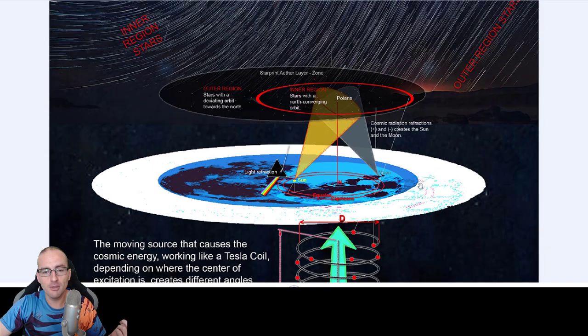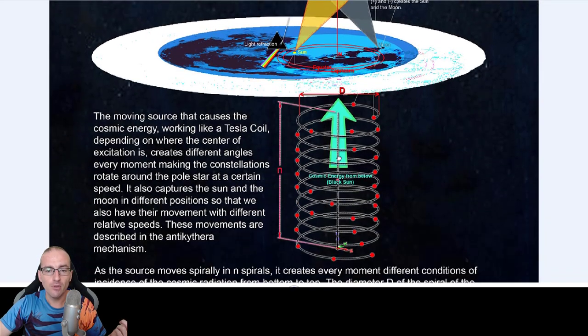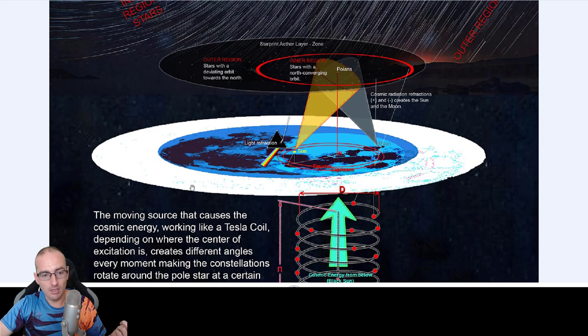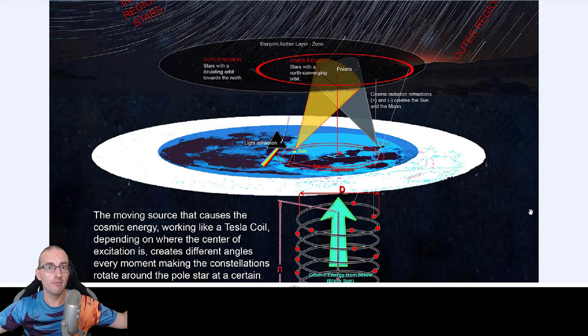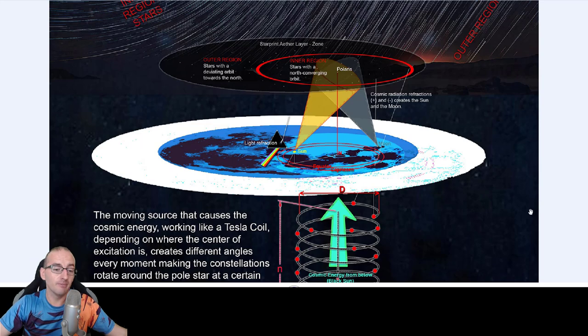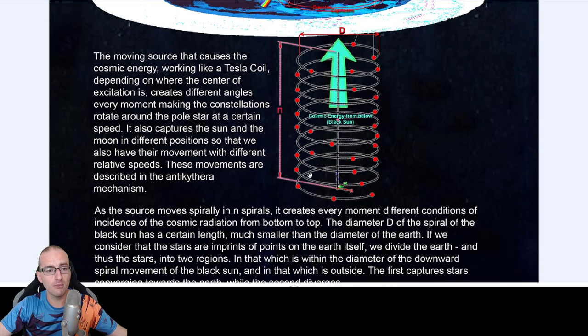Pause the video here. This is the black sun here with the diameter and the spiral. But the black sun moves underneath the earth. The earth is way bigger than the black sun. That's why you have an electromagnetic dynamic field and that's why you have convergence and divergence for the stars depending on where you live in this world. Let's read more because it's getting even more interesting.